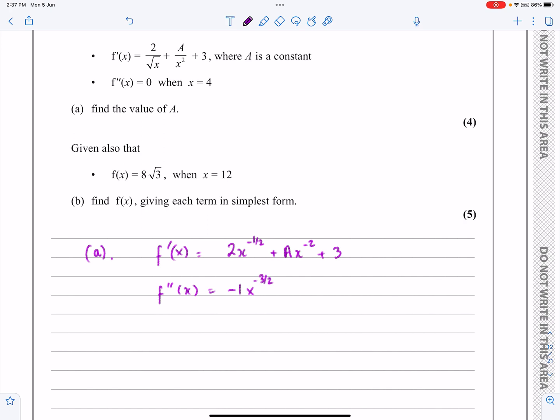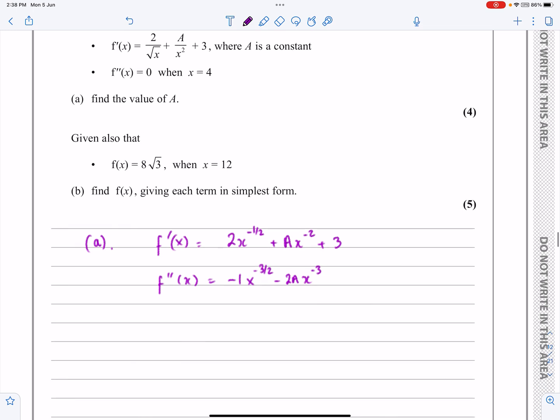For the second term, multiplying by the power becomes minus 2a, taking 1 off the power becomes x to the minus 3. Just be careful with those ones, you should have had enough practice of that by the time you're doing past papers.